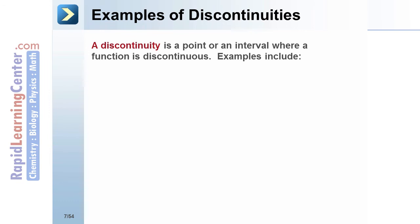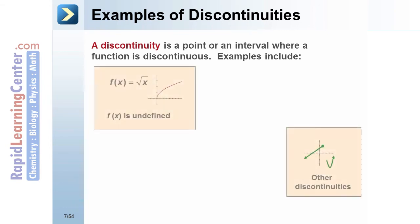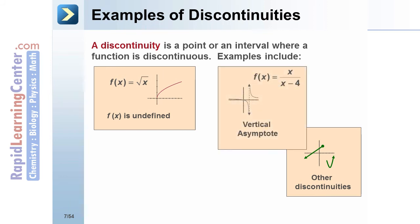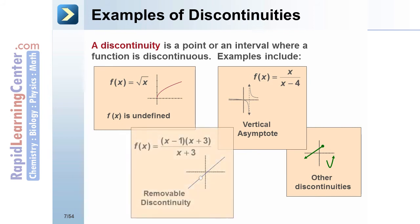A discontinuity is a point or an interval where a function is discontinuous. Examples include a point or an interval where a function is undefined, a point where there is a vertical asymptote, or a point where there is a removable discontinuity.